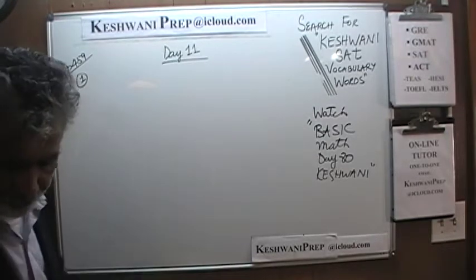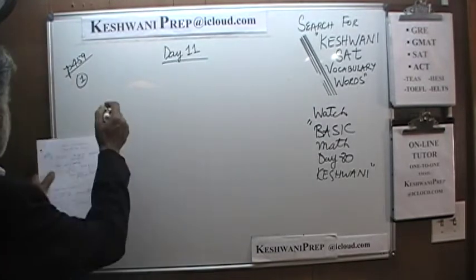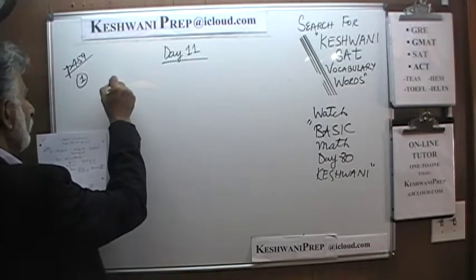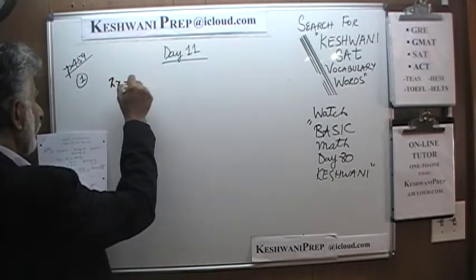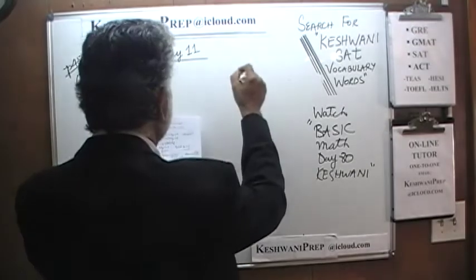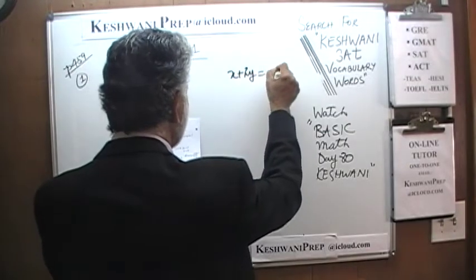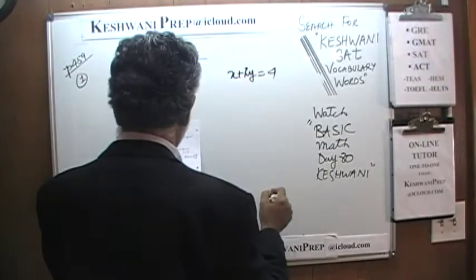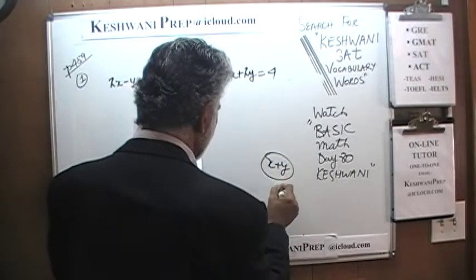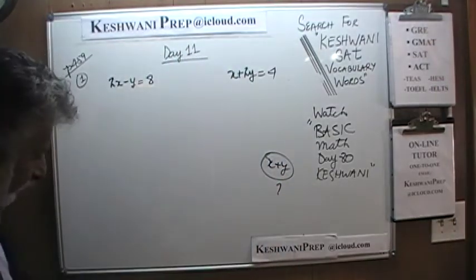Let's take a look at the very first one. We have two equations: 2x minus y equals 8, and x plus 2y equals 4. The question simply is: what is the value of x plus y?